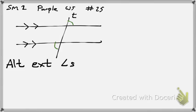What do I know about alternate exterior angles if the lines are parallel, Bo? If the lines are parallel, what do I know about alternate exterior angles?